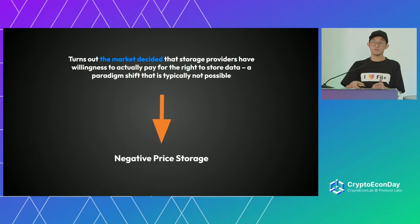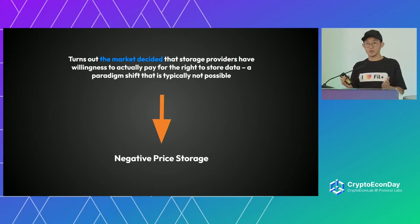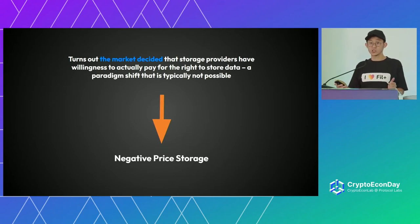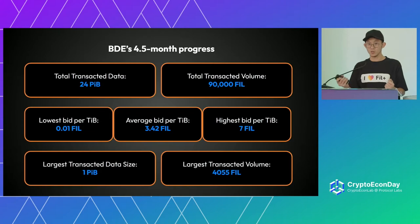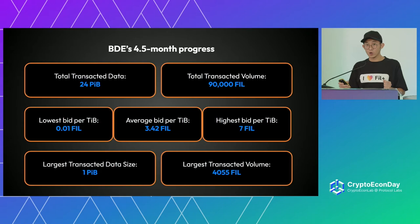When we built BDE, it turns out that the market decided that storage providers have a willingness to pay for data. This is a paradigm shift that is not possible with the Web2 world — this is what we call negative price storage. And it's not just one storage provider thinking this way; there is market consensus. In the past four and a half months we have done about 24 petabytes of data transactions and 90,000 Filecoin have exchanged hands.